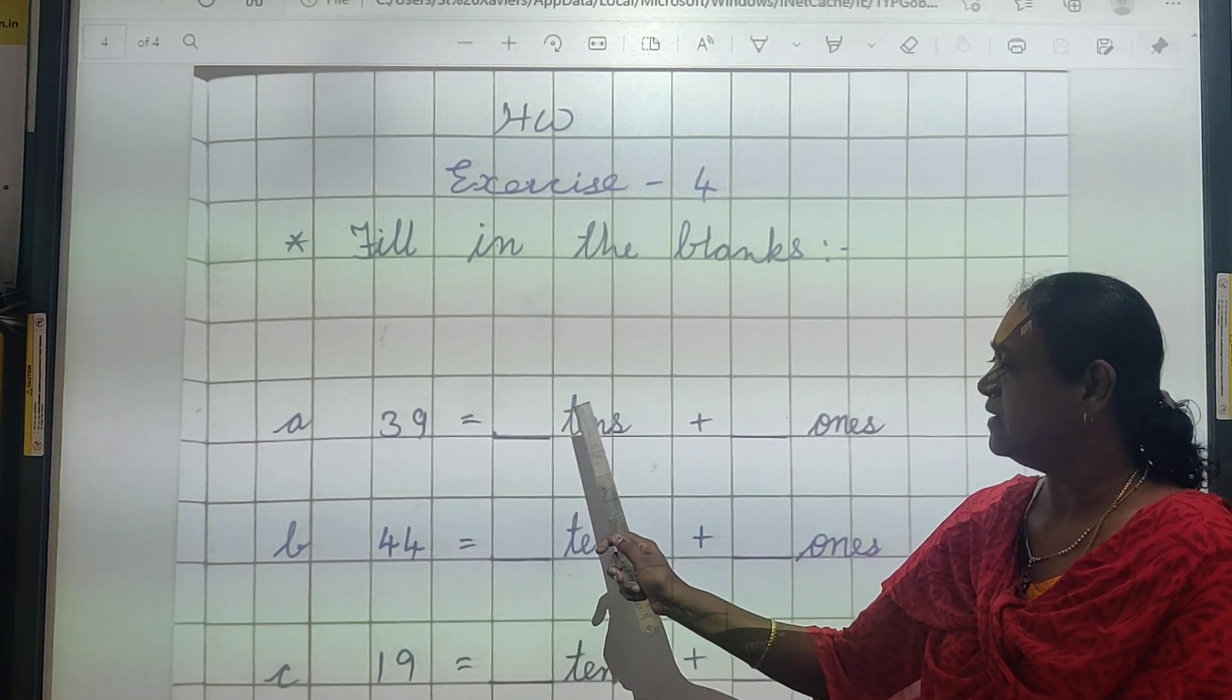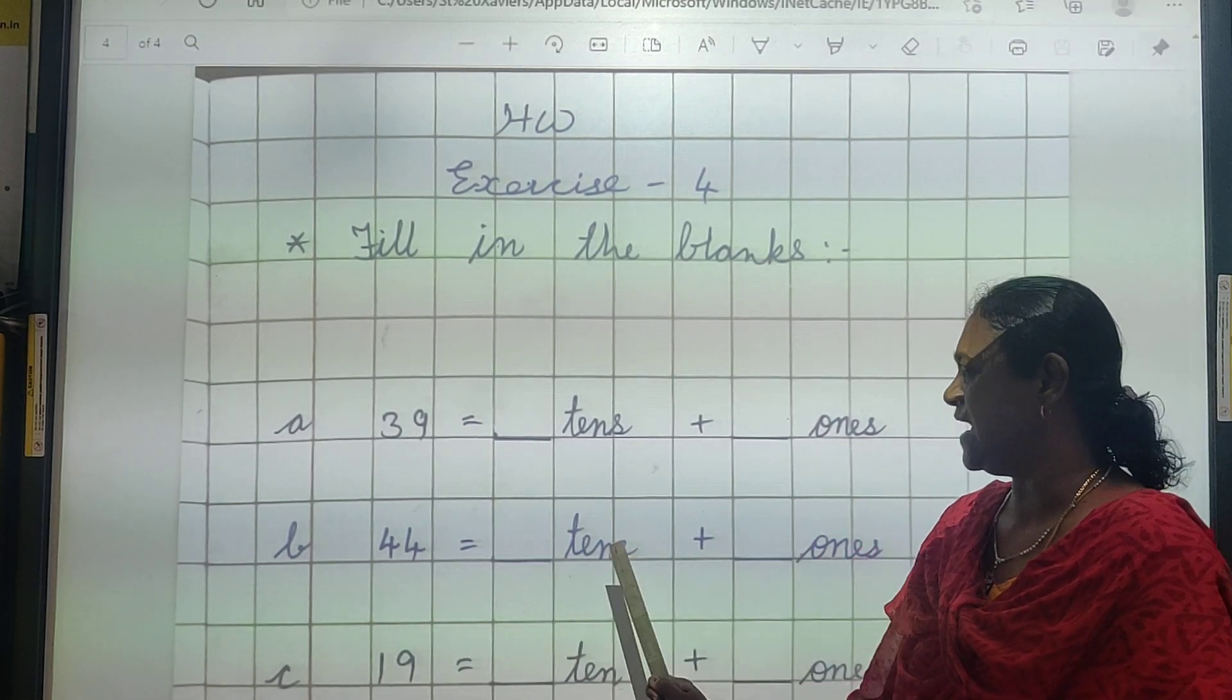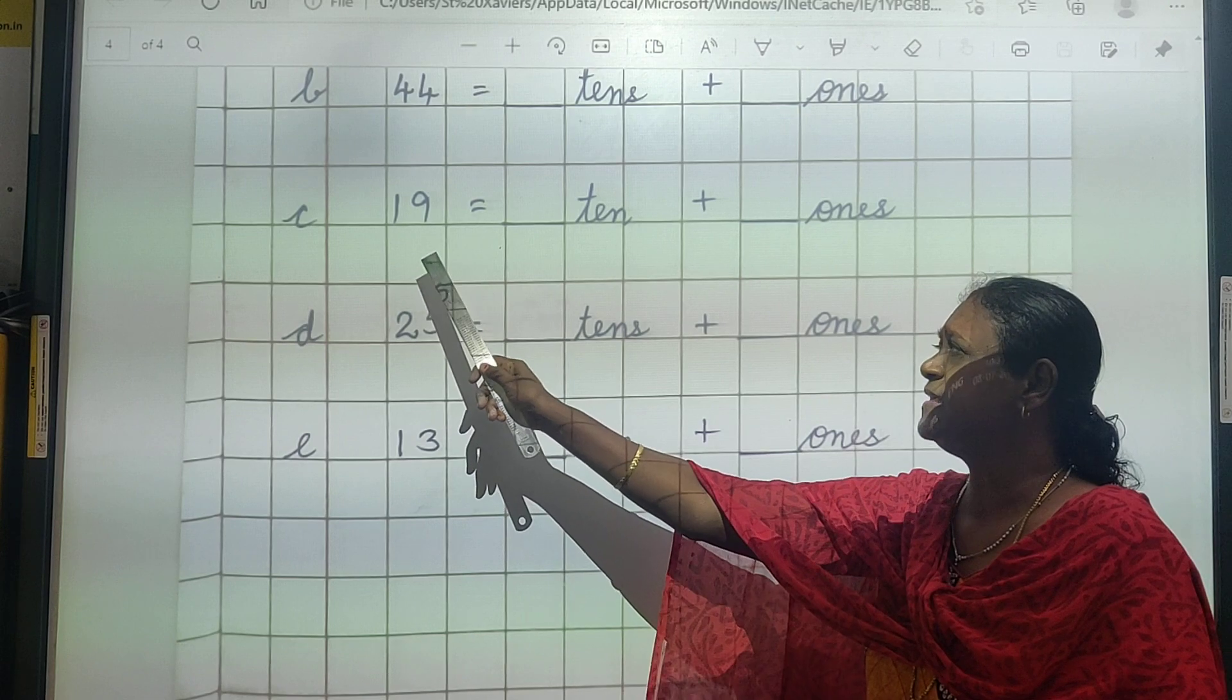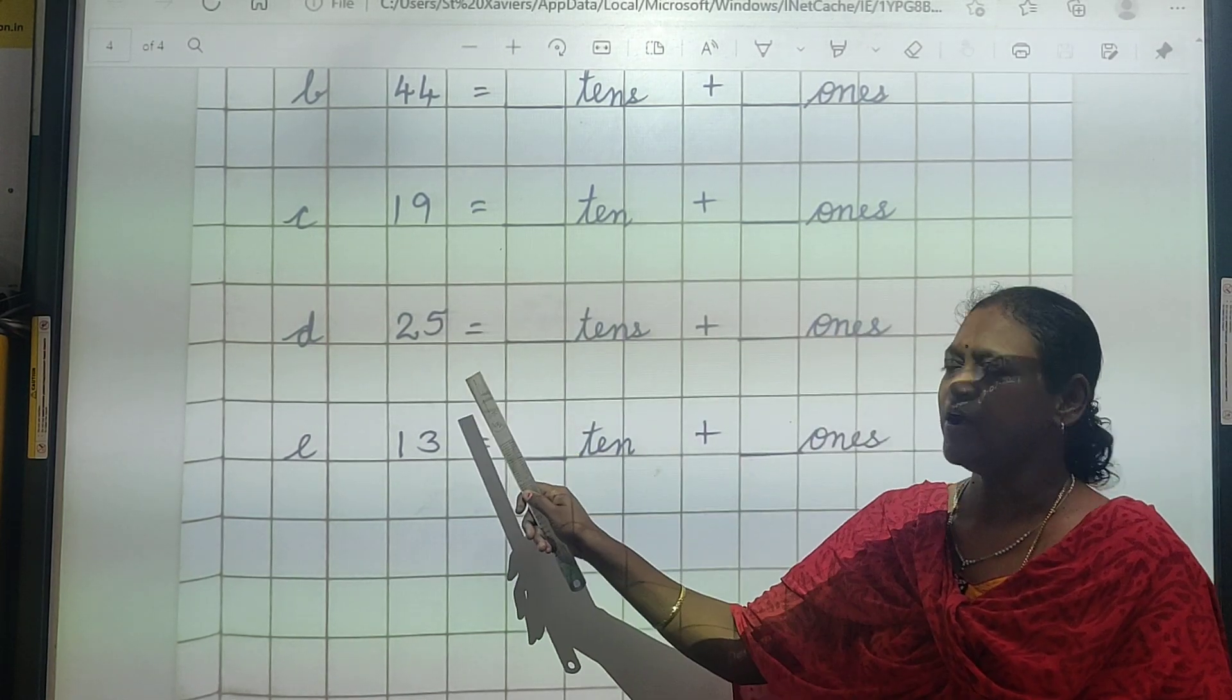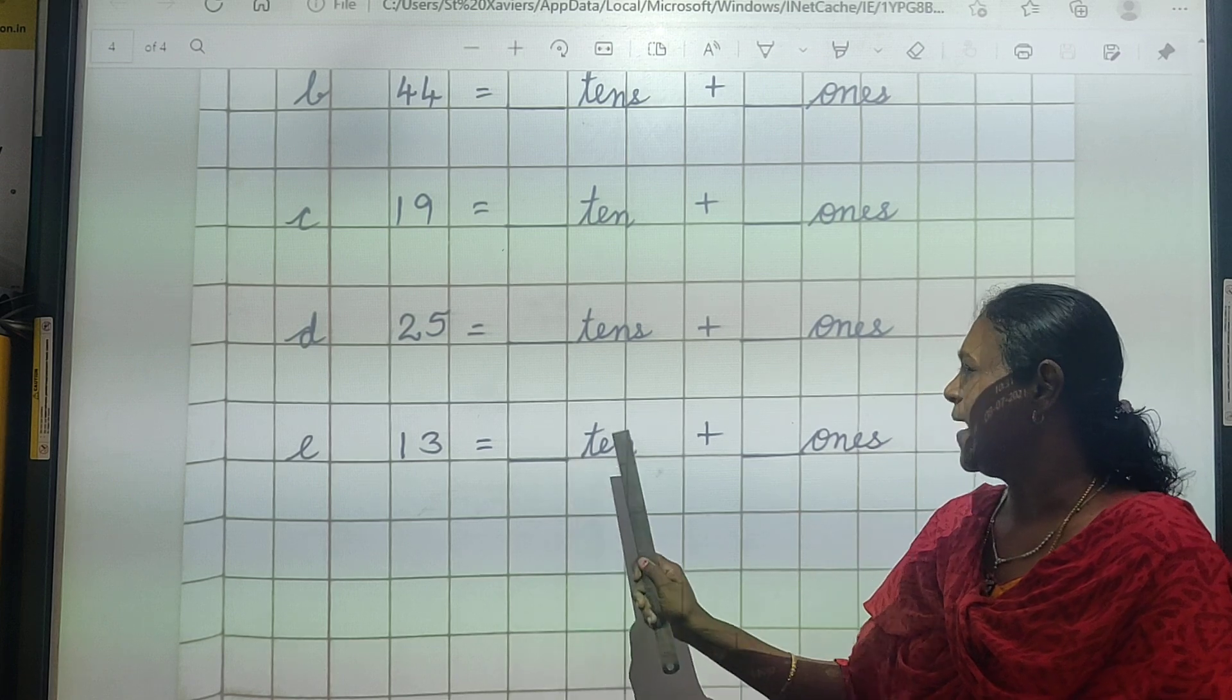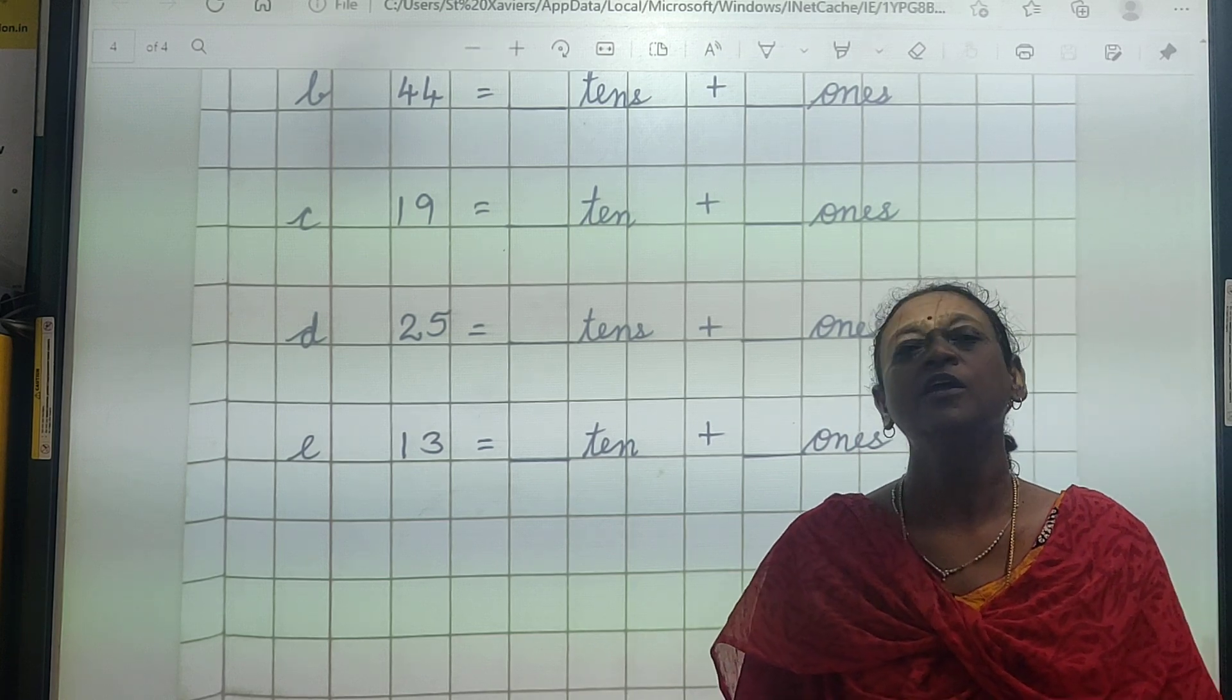44, now both are same, so 4 tens and 4 ones. Okay. Now this is 19, so 1 ten plus 9 ones. 25, 2 tens plus 5 ones. This is 13, 1 ten plus 3 ones. Like this way you have to do the exercise in your notebook.